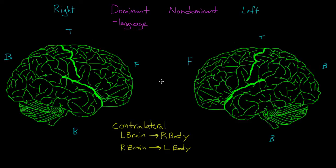One last thing you might be wondering about is that if we have two different cerebral hemispheres, how do they talk to one another? How do they communicate? And the answer is that they communicate through a large band of fibers known as the corpus callosum. And without this corpus callosum, the two sides of the brain can't communicate with one another — each one doesn't know what the other one is doing. And that can produce some incredibly interesting consequences that we're going to talk about in a future video.